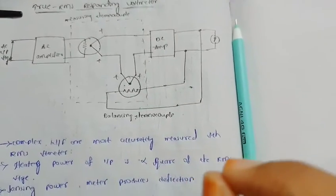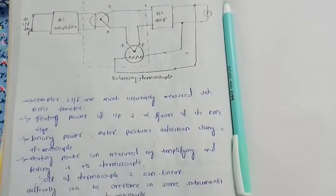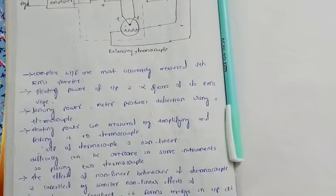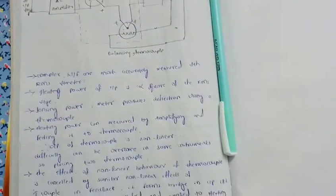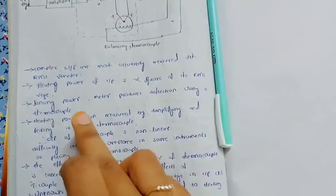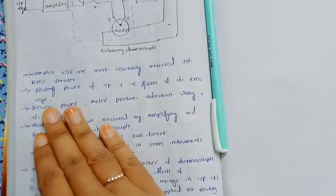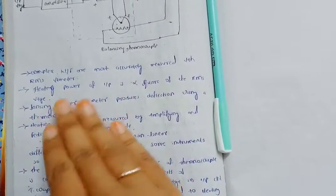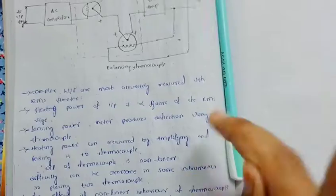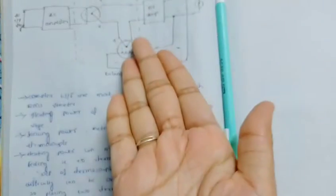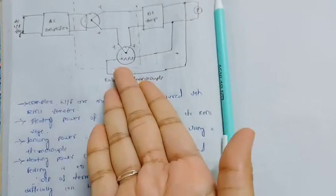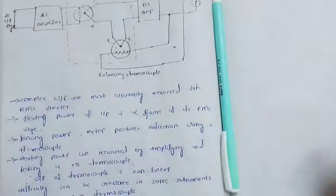So the True RMS Responding Voltmeter can measure complex waveforms accurately. The heating power of the input is proportional to the square of the RMS value, and sensing the power meter deflection using the thermocouple. This is a non-linear effect.